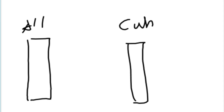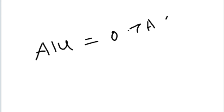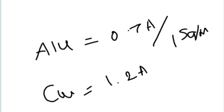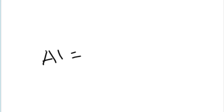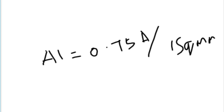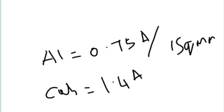So basically about the copper part. The aluminum bar has a current carrying capacity of 0.7 amps per one square mm, and the copper bar has a capacity of 1.2 amps per one square mm. So for the aluminum bar, the rating is 0.75 amps per one square mm, and for the copper bar, the rating is 1.4 amps per one square mm. So based on this, you choose the appropriate bus bar size.